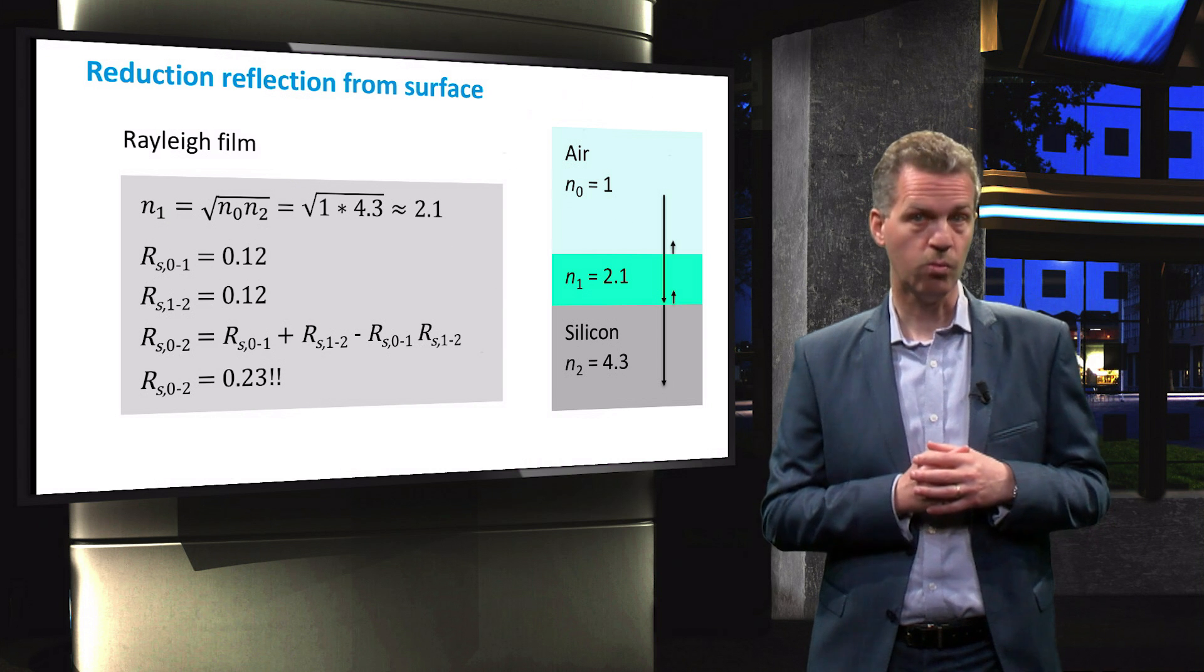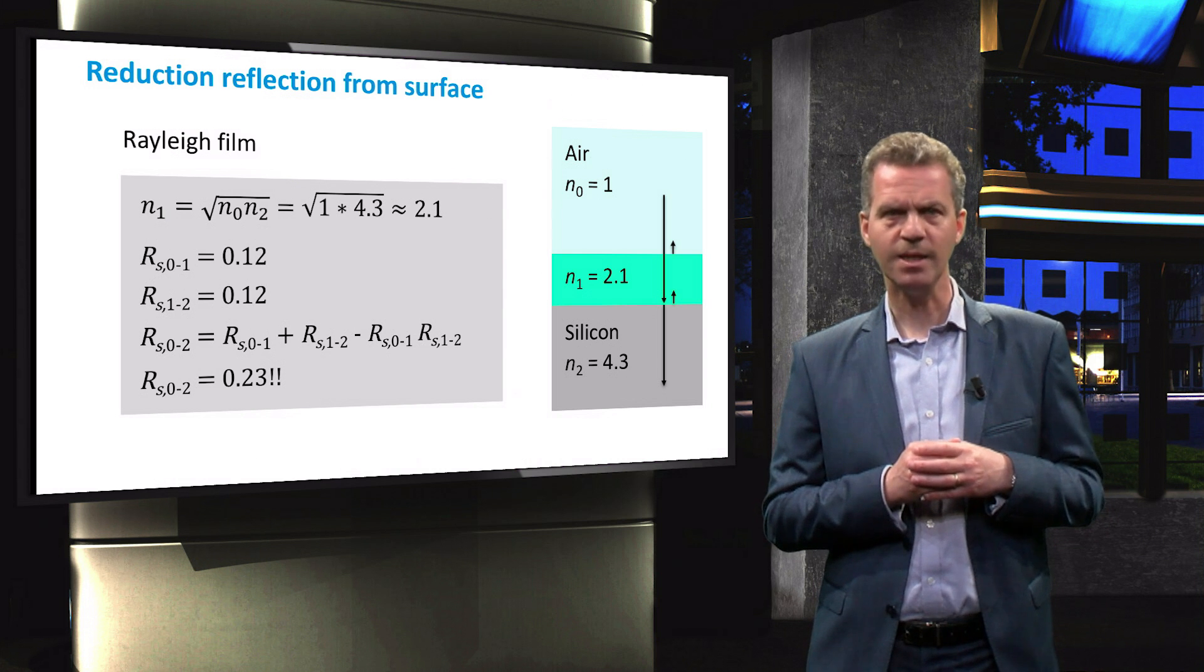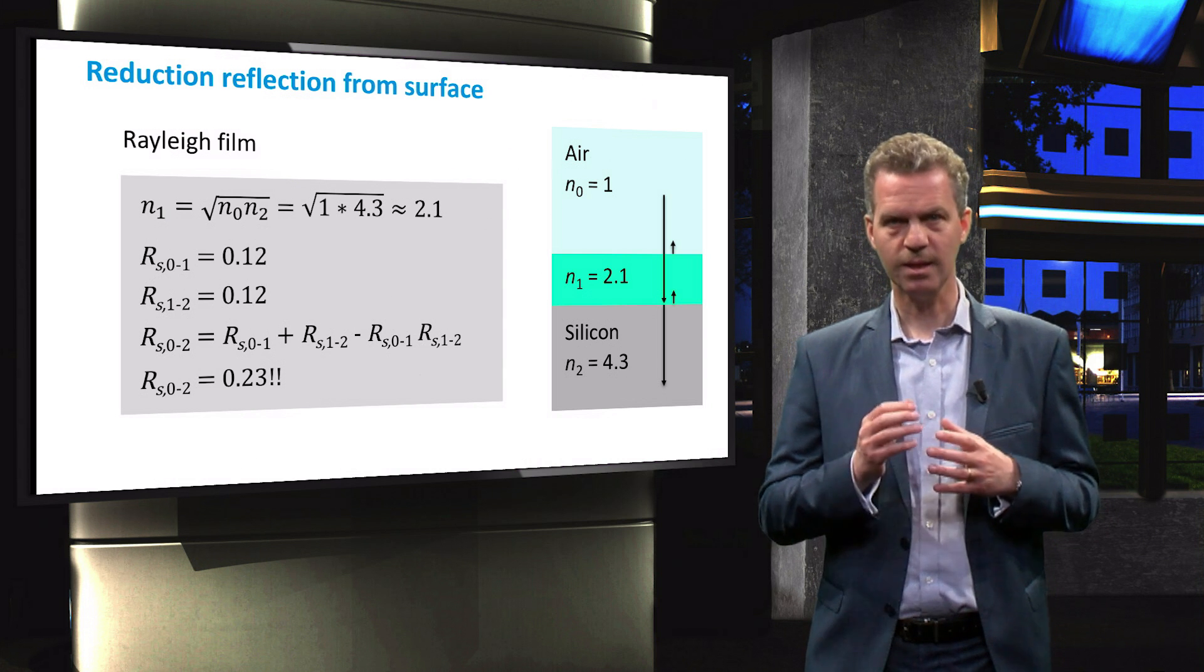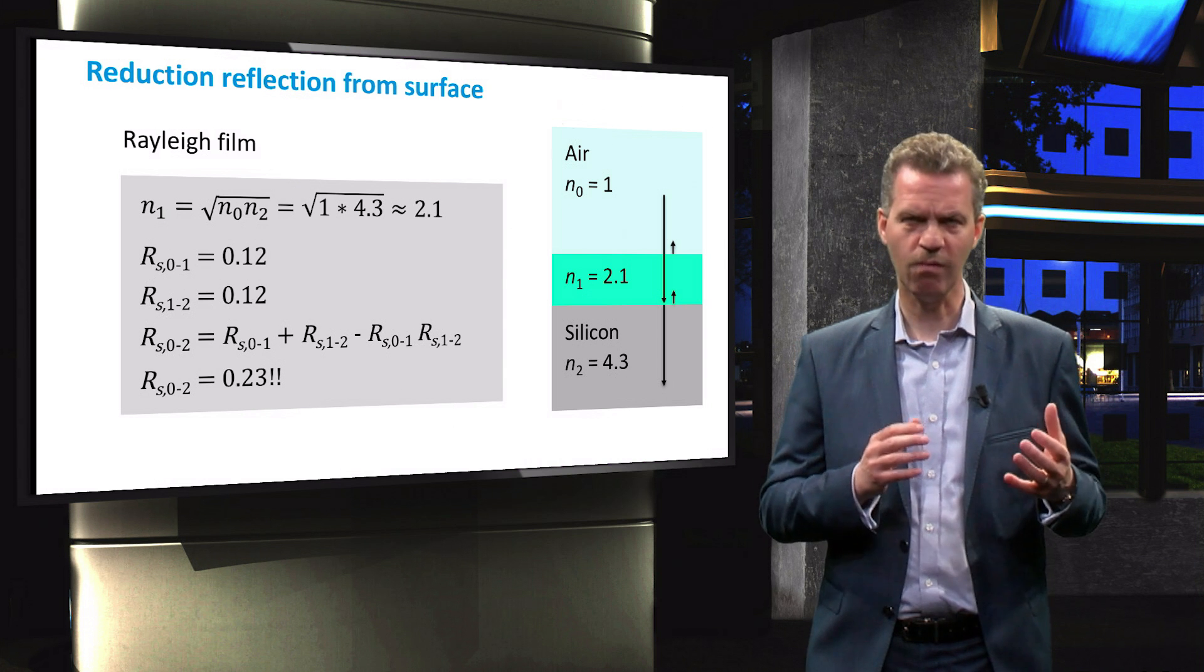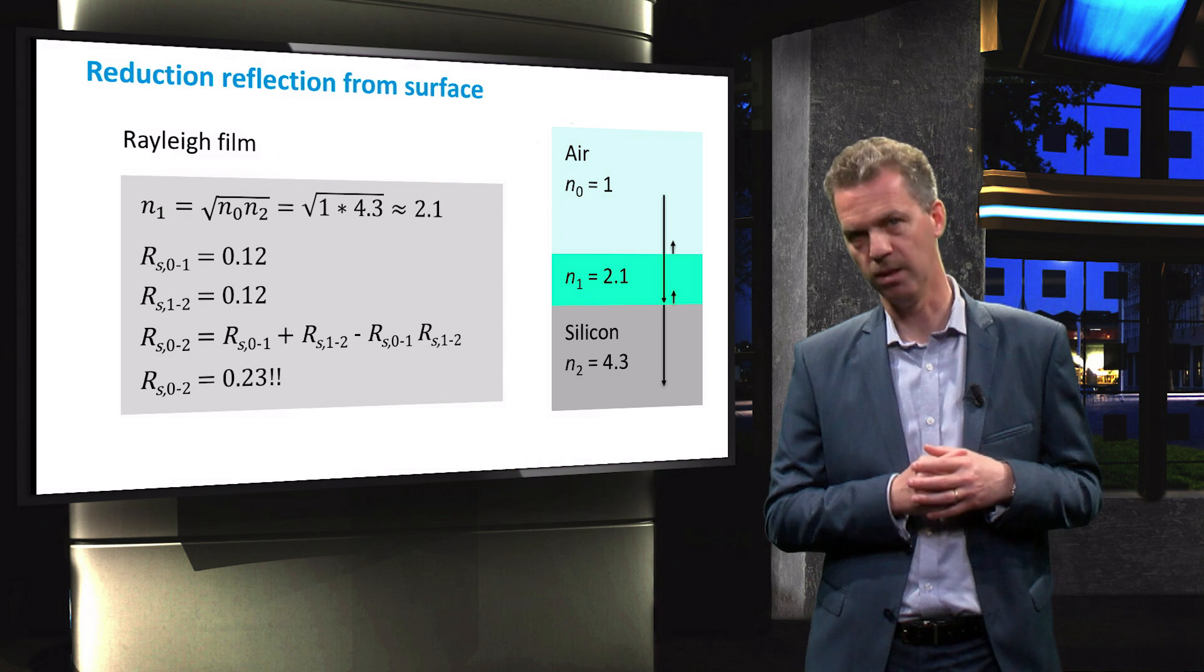I invite you to work out this example by yourself. Keep in mind that the reflected light at the Rayleigh film to silicon interface can be reflected back into the wafer at the air to film interface.